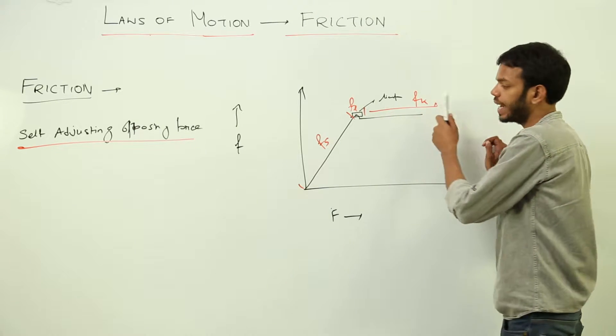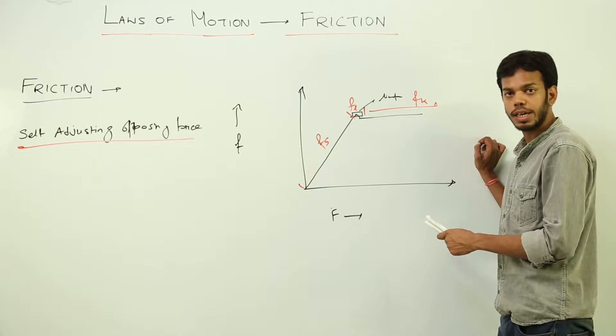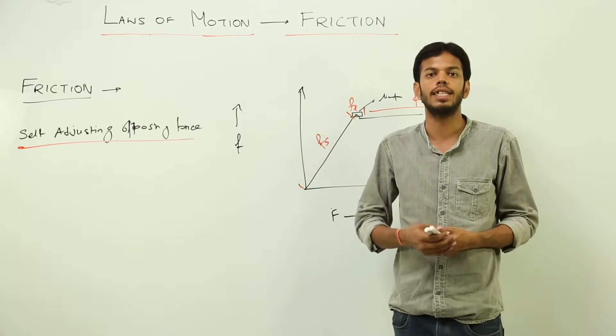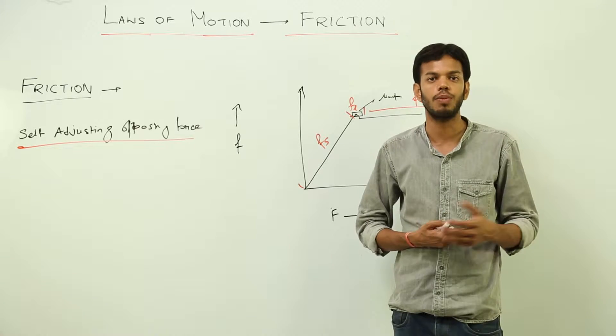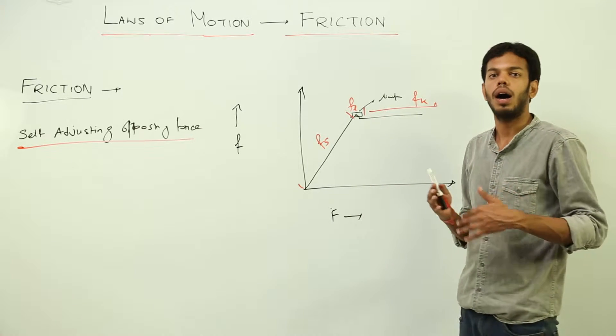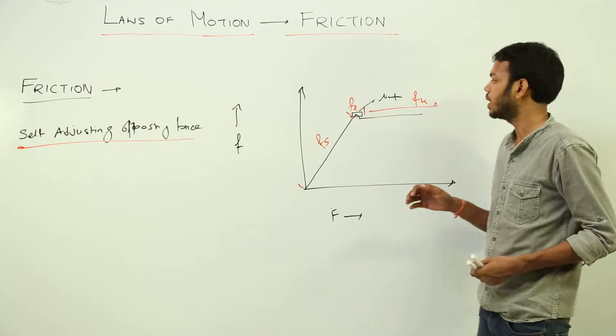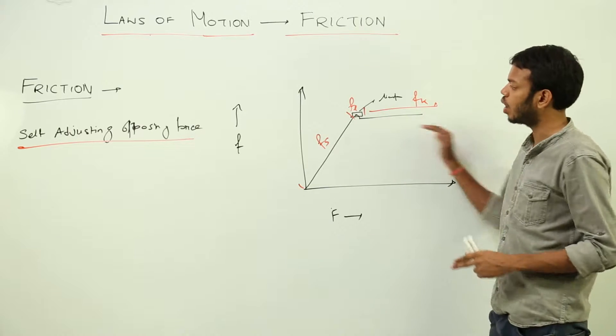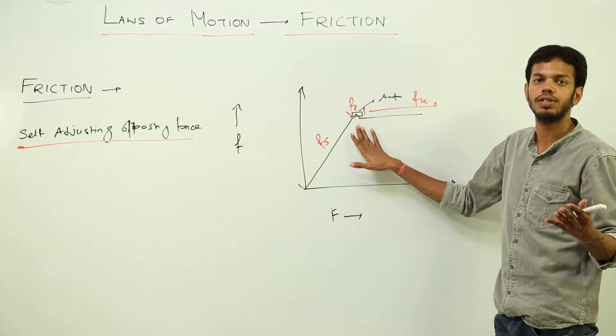But in case of kinetic friction, the force is applied to overcome the further formation of bond, just to prevent the further formation of bond or to overcome a little bit of bonds which have been formed. That is why the value of kinetic friction is always lesser than the highest value of static friction.